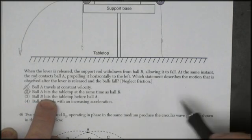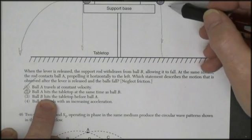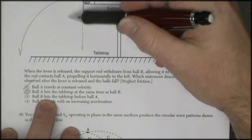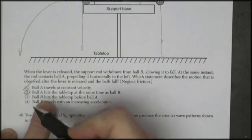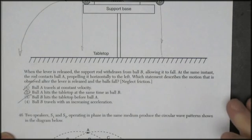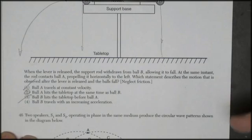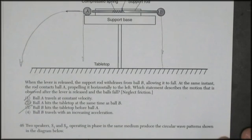Ball B hits the tabletop before A. No, that's kind of what people think—well, it's going straight down, it'll hit first. But in fact, this whole demonstration is to show you that they hit at the same time. So answer three is what people might guess, but it's the wrong one. Ball B travels with an increasing acceleration. No, it's on planet Earth. It's going to accelerate the same. There's no rocket engine on that thing.